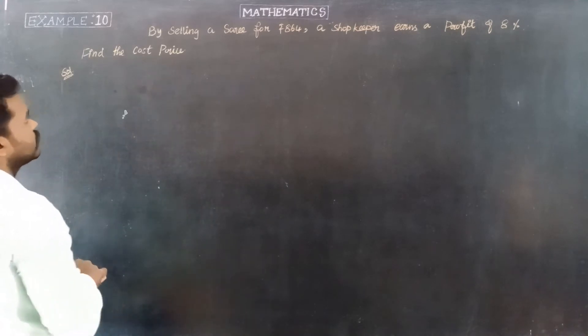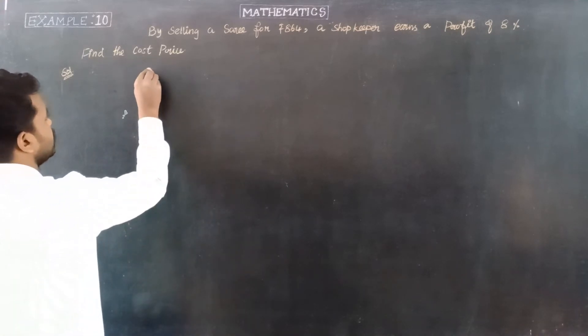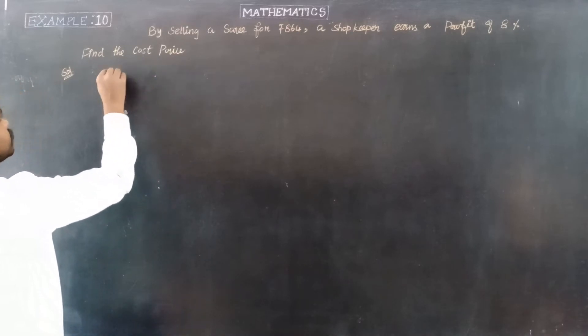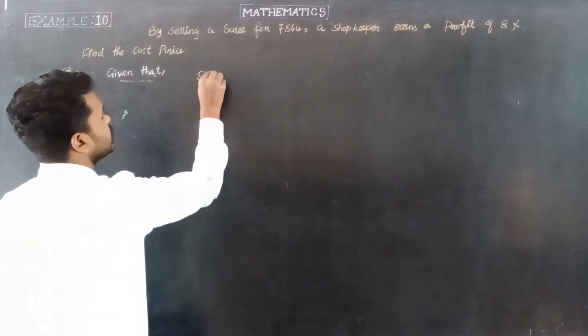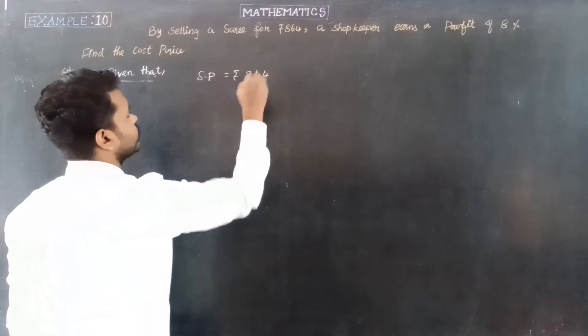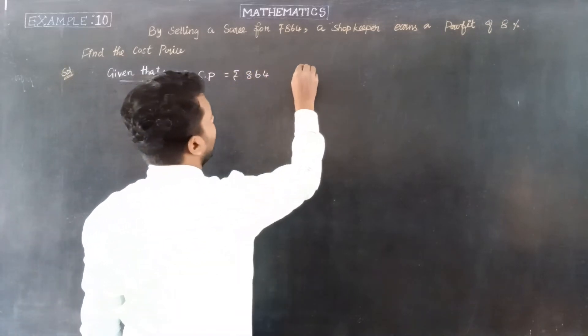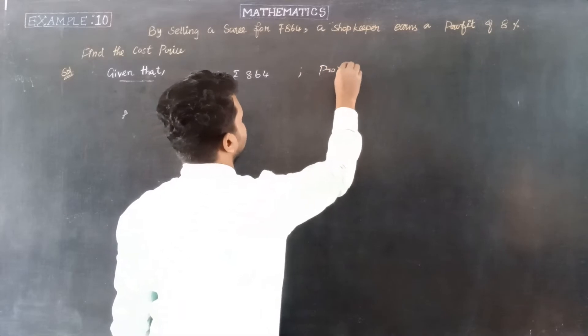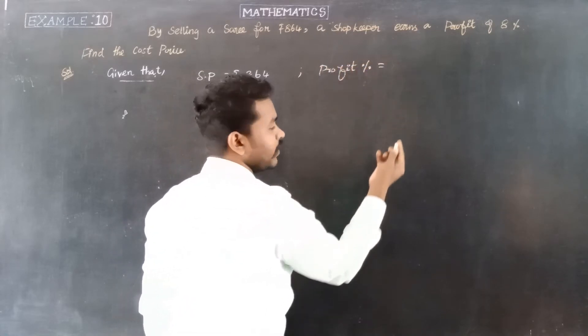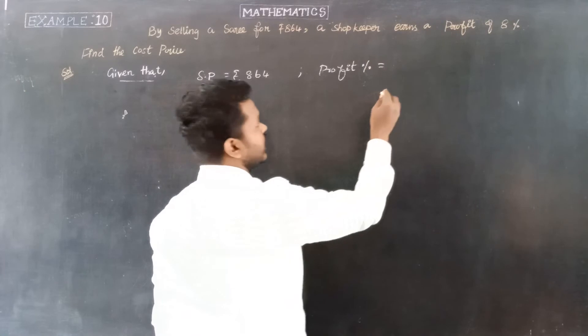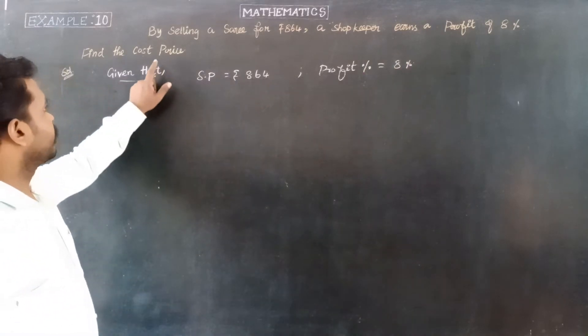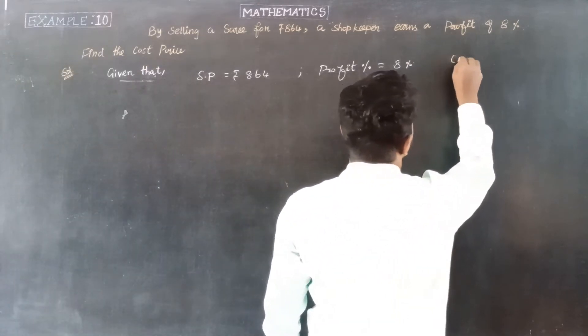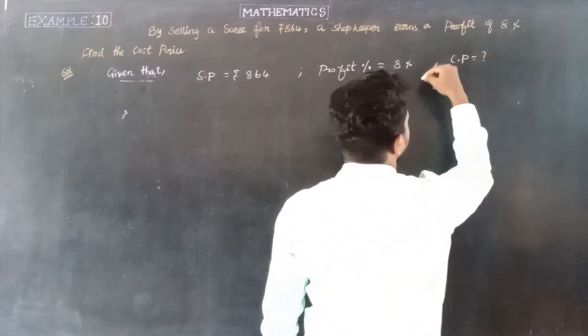First, the selling price of the sari is given as Rs. 864. The profit percentage is 8%, not the profit amount. We need to find the cost price.